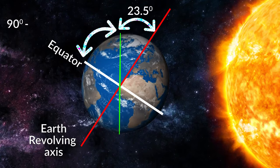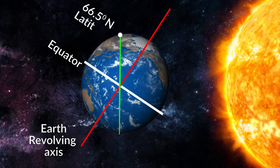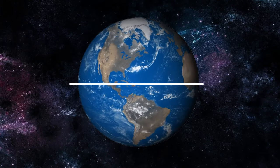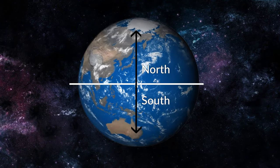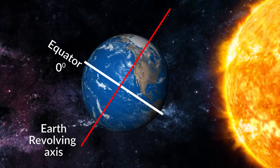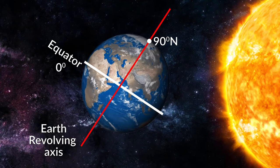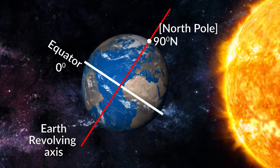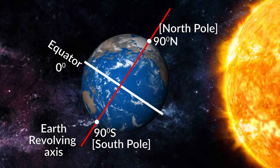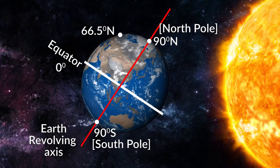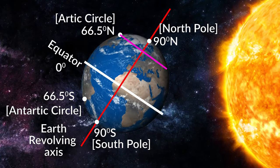The angle of the tilt is 66.5 degrees. If you look at 0 degree latitude, it is used at the same place. At 90 degree north latitude, this is the northern pole. At 90 degree south latitude, this is the southern pole. At 66.5 degree north, this is the Arctic Circle. At 66.5 degree south latitude, this is the Antarctic Circle.